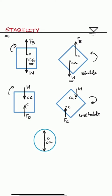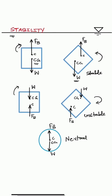In a third case, if both CG and CB are located at the same point, then this body is under neutral equilibrium because if we give any movement to this body, there will be no change in its position because both the forces are acting at the same point.